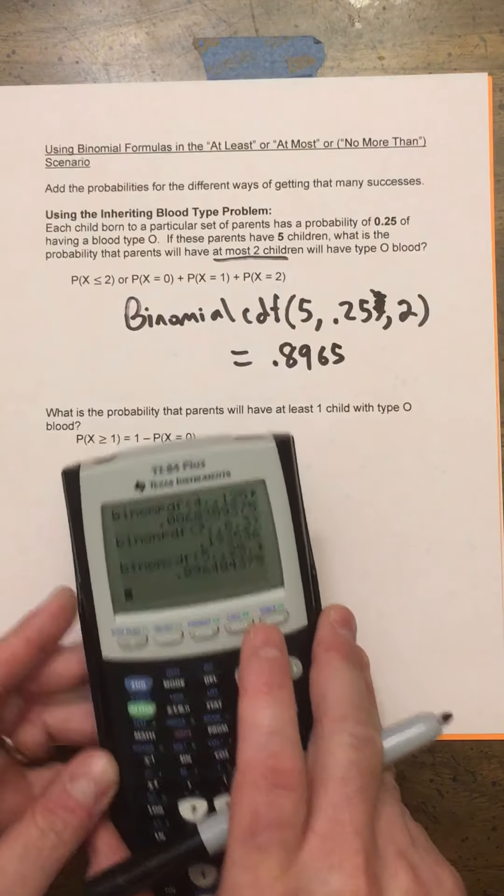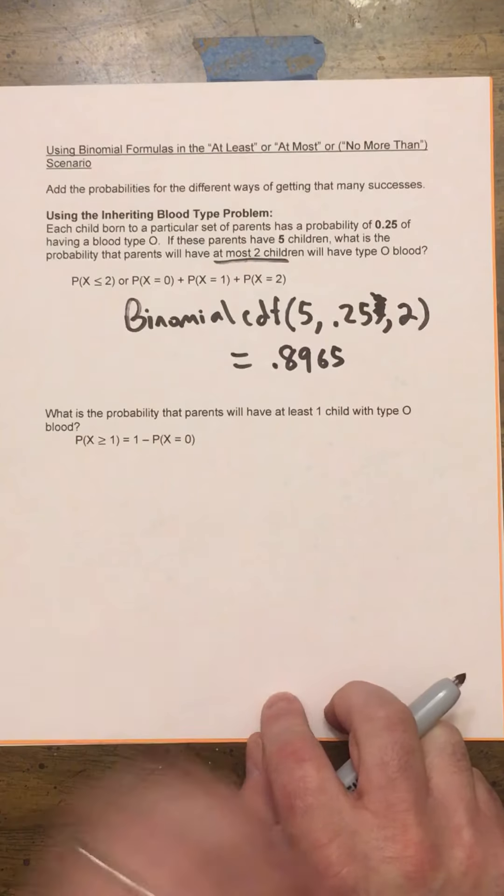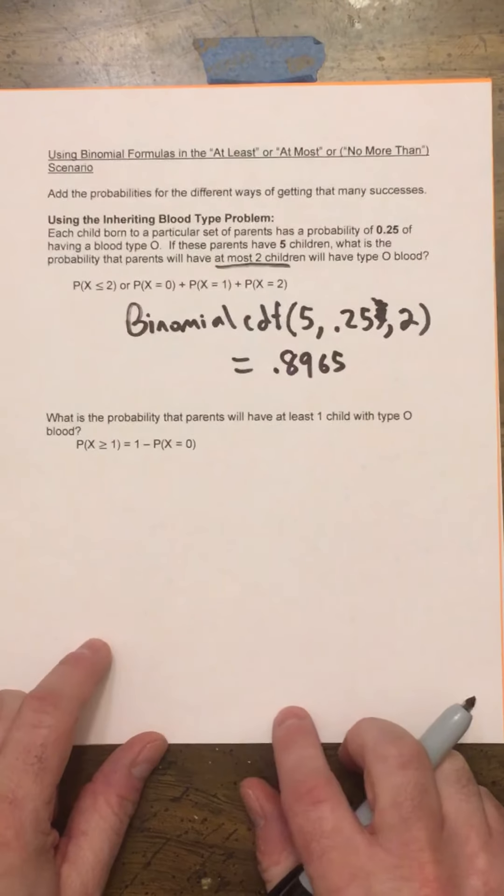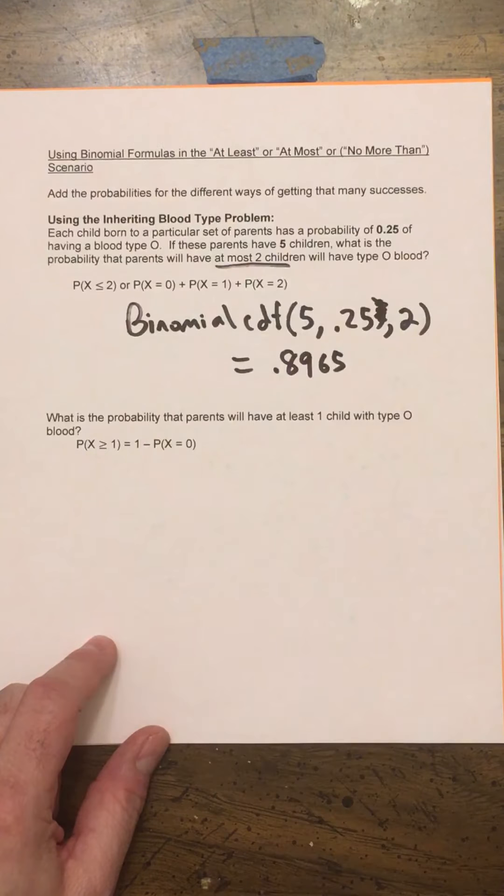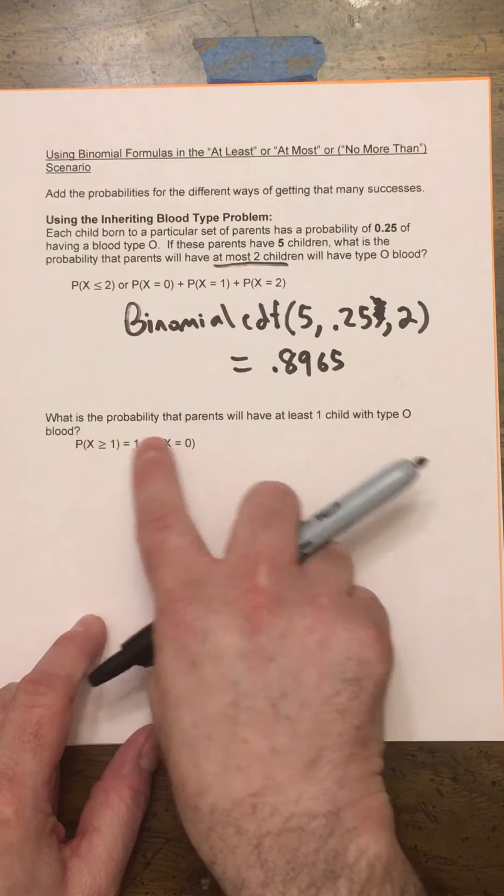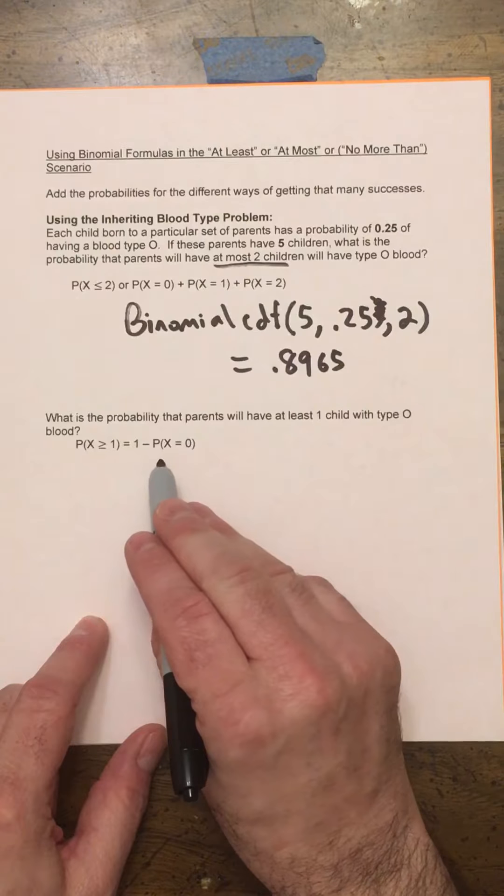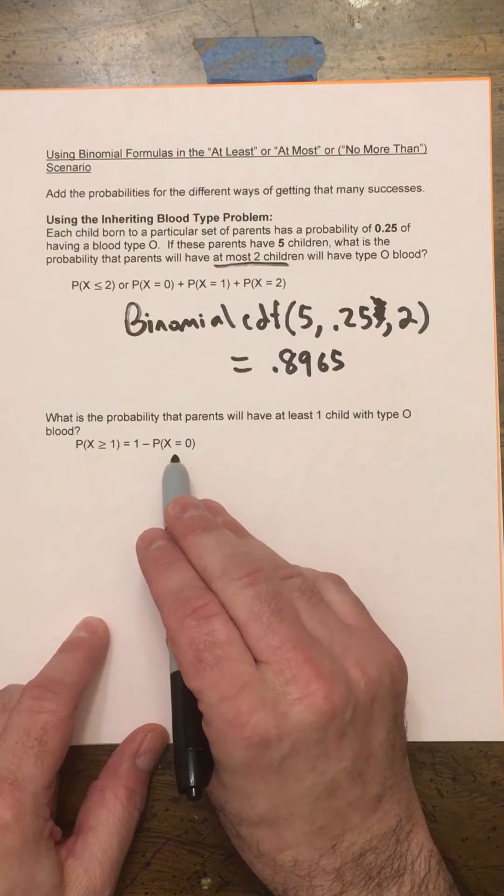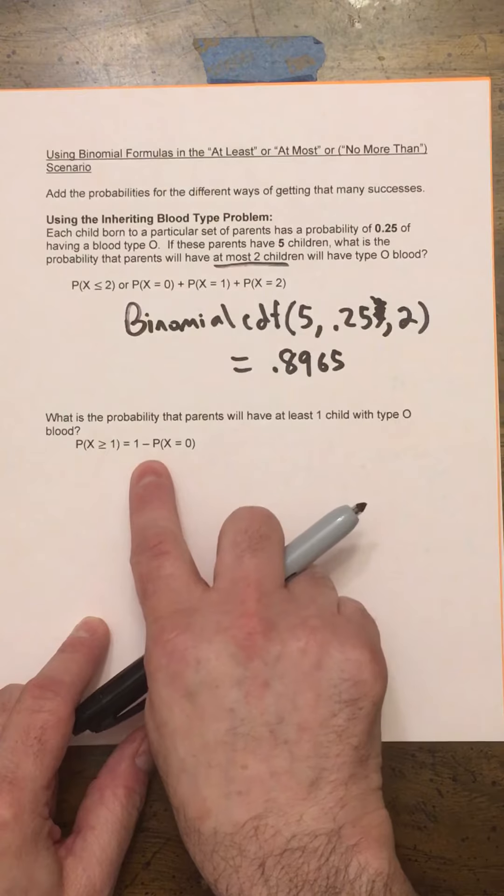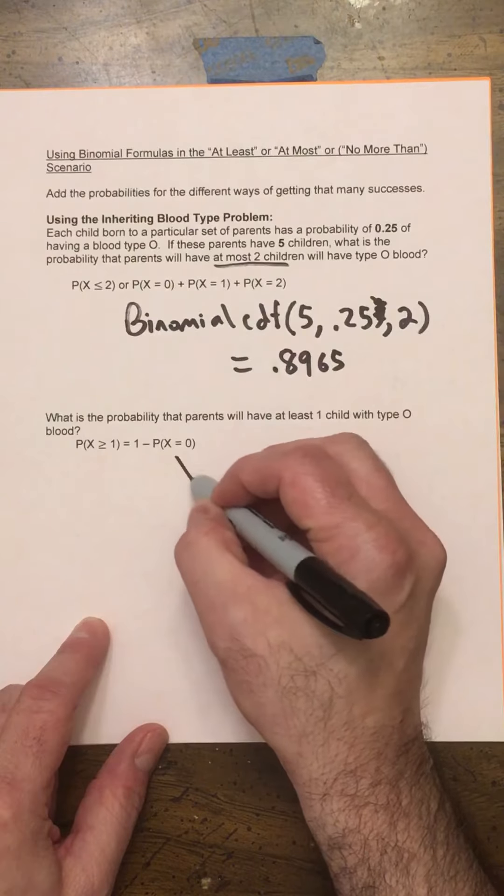If we did it individually, what we would need to do is, well, I'm not going to do it now. Let's try another one. What's the probability that parents will have at least one child with O-type blood? Because the calculator actually computes it from low to high, that's the same thing as having 1 minus the probability of having only no children with blood type O. That's the same thing as having at least one child.